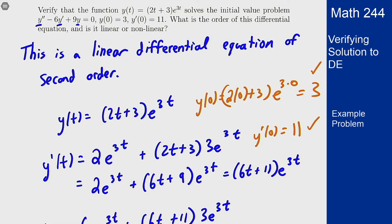So since this given function (2t + 3)e^(3t) both solves the differential equation part and meets the initial conditions, it then solves this initial value problem.